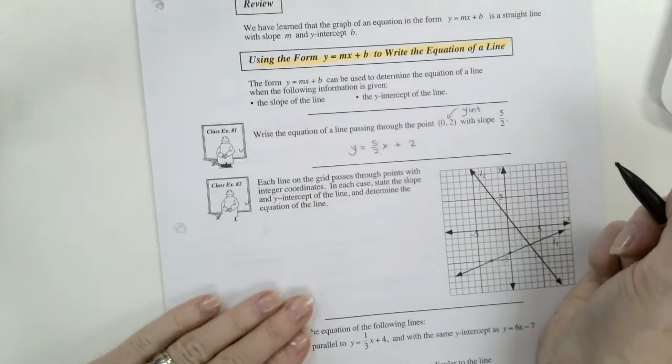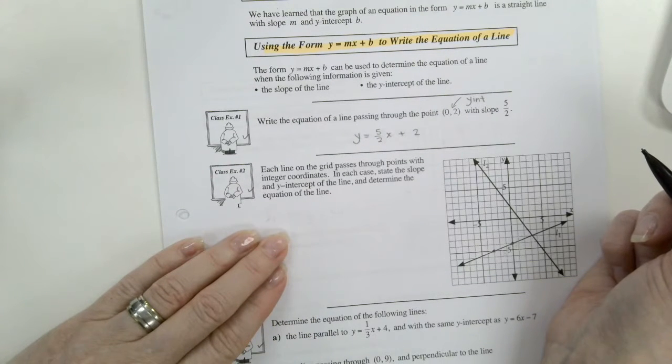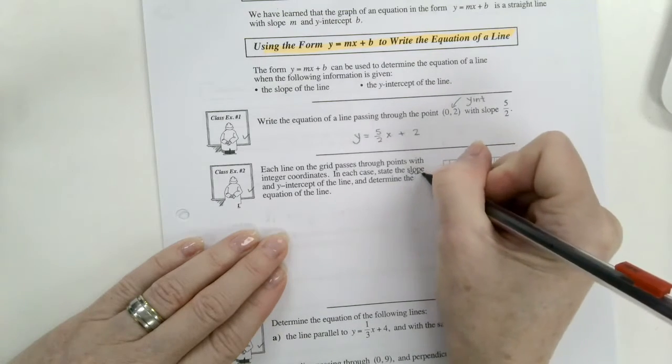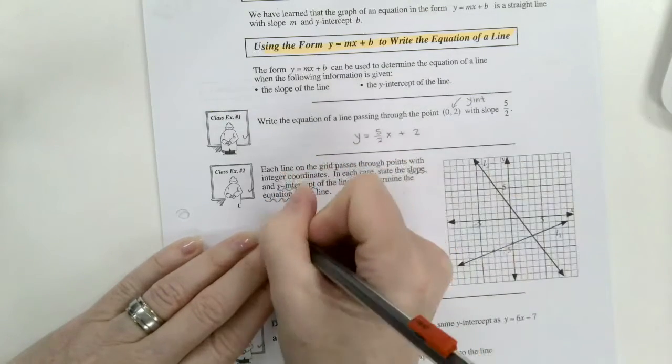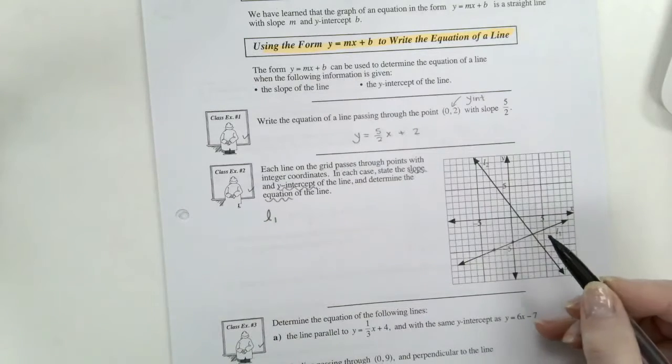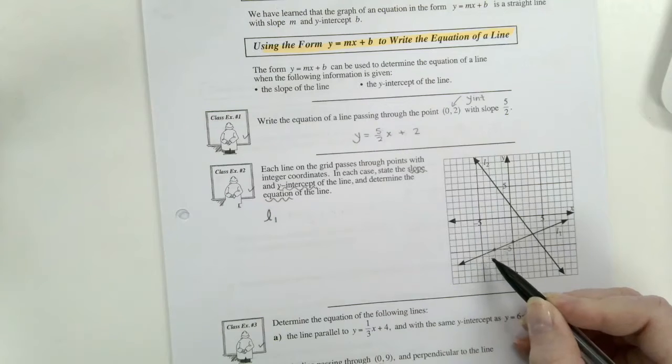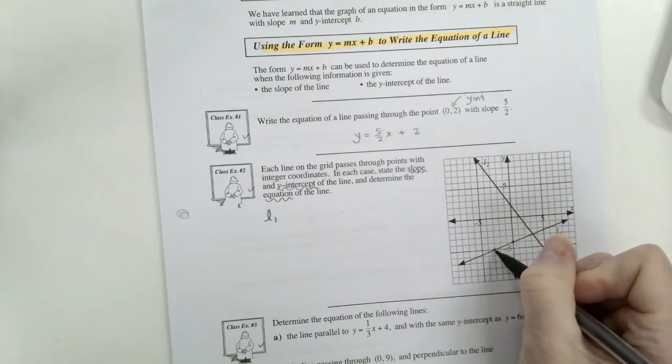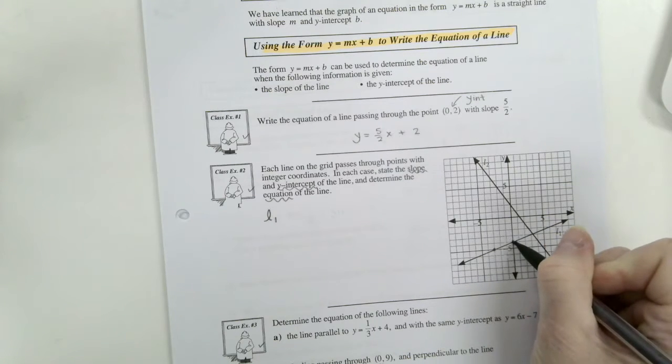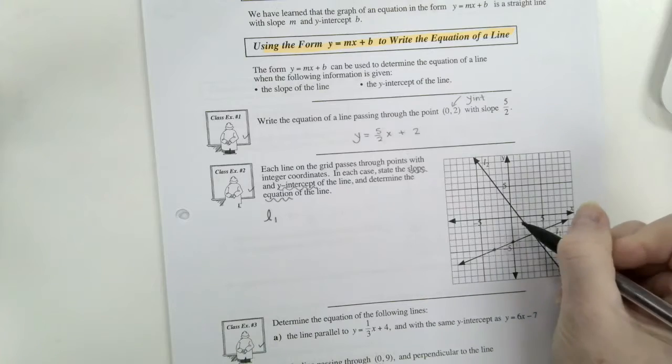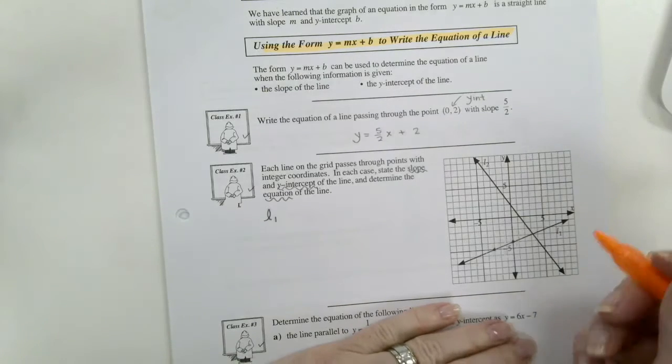Number 2. Each line on the grid passes through points with integer coordinates. In each case, state the slope and y-intercepts of the line and determine the equation of the line. Line 1. And we want to find places on the line where it crosses exactly at integer coordinates. Here at negative 3 and here at negative 4. And if we make that into a nice little triangle, then we can easily find the slope.